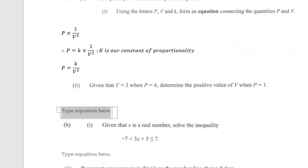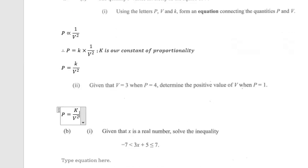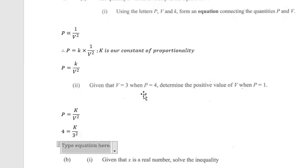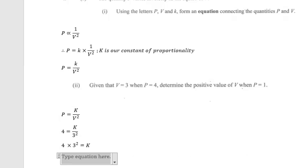Part two says: given that v equals 3 and p equals 4, determine the positive value of v when p equals 1. Using our formula p equals k divided by v squared, we substitute p equals 4 and v equals 3. So 4 equals k divided by 3 squared. Moving 3 squared across, we get 4 multiplied by 9 equals k.